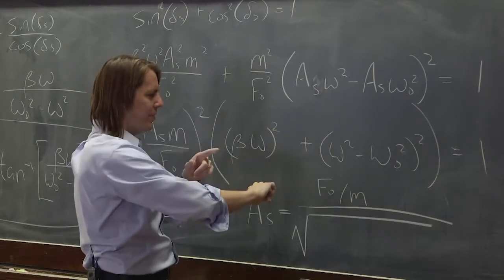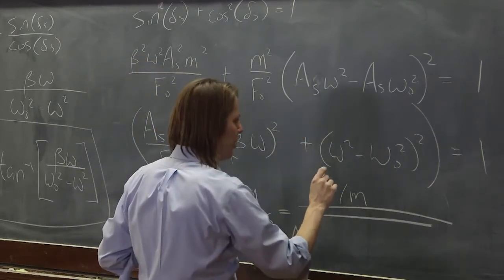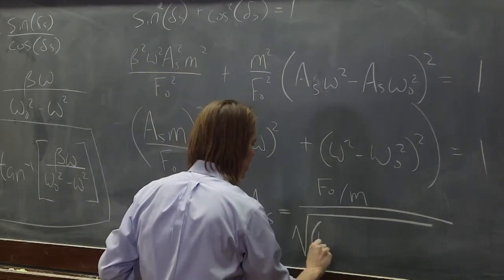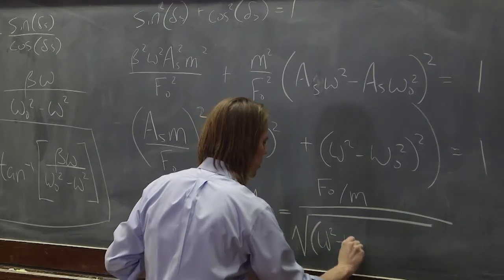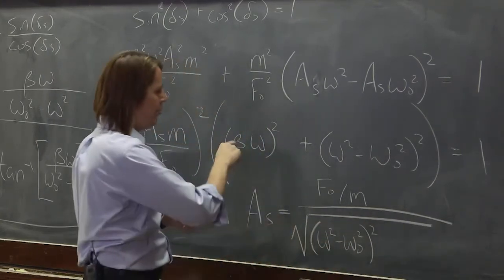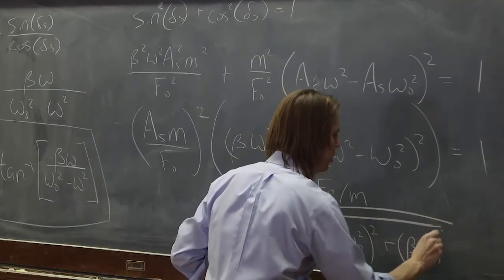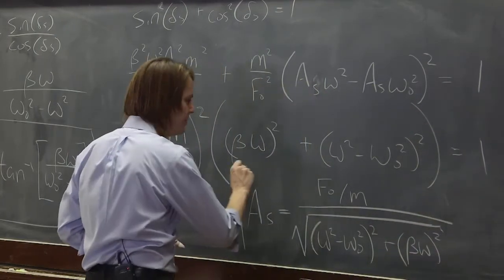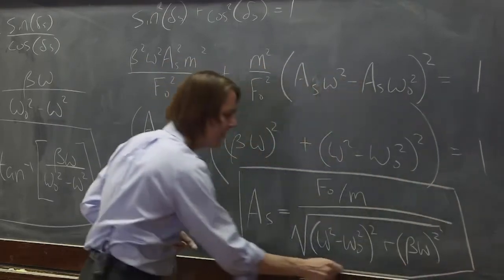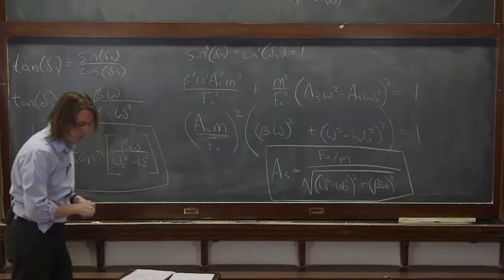And I'm going to flip the order of these two here. Omega squared minus omega naught squared squared, plus beta omega squared. And that is your steady state amplitude just in terms of things you know.